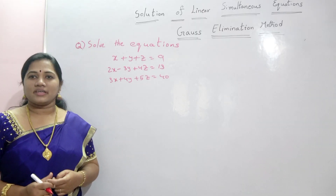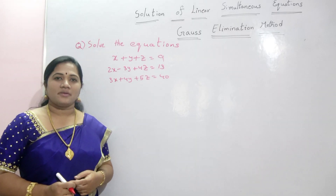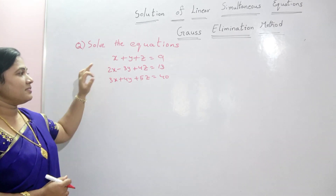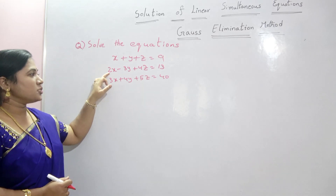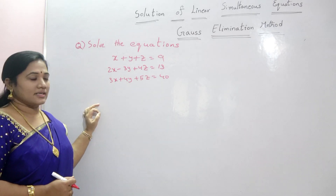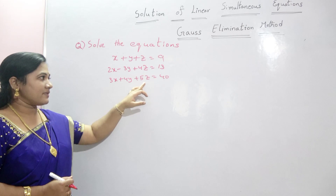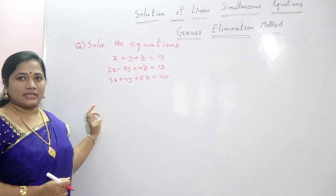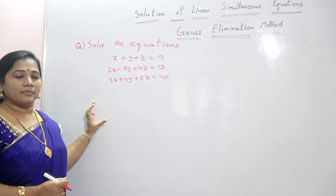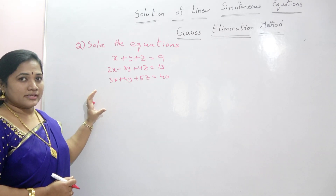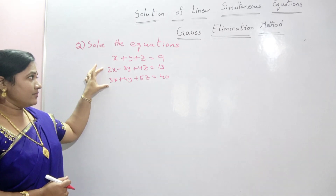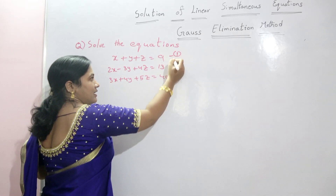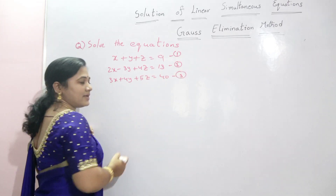Let me solve an example for easy understanding of the Gauss elimination method. Solve the system of equations: x + y + z = 9; 2x − 3y + 4z = 13; 3x + 4y + 5z = 40, using the Gauss elimination method. This is equation 1, equation 2, and equation 3.